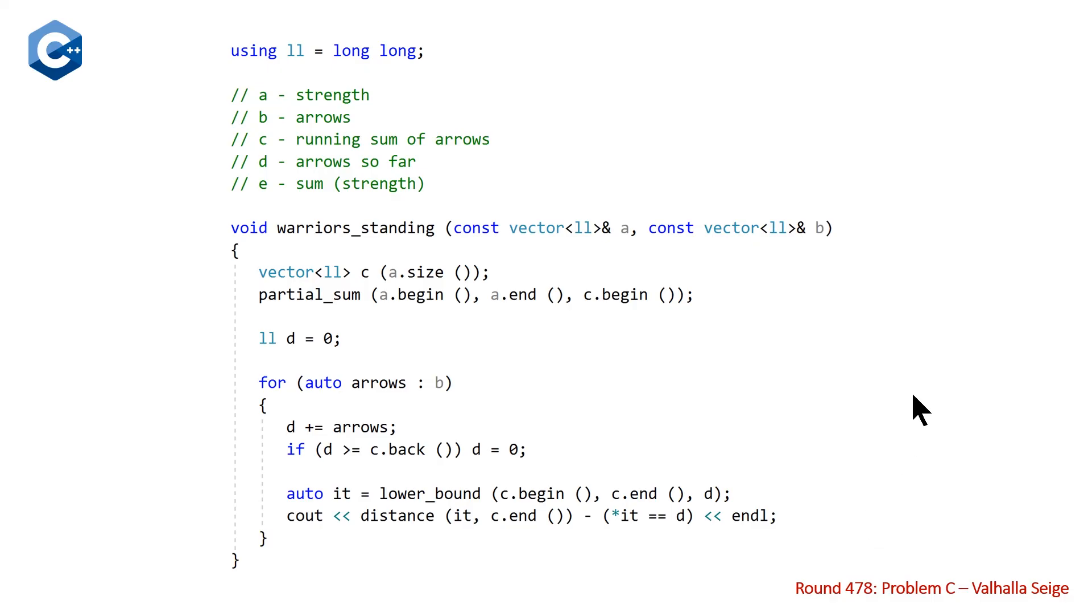And so once we've done this, we have our solution. So the last thing to talk about is the time complexity. And that will be big O of q log n, q being the number of turns and log n being the size of our partial sum vector that we have to do our lower bound call on.